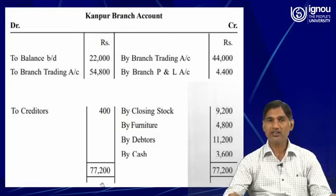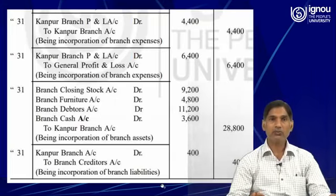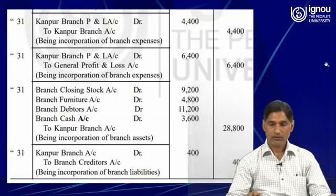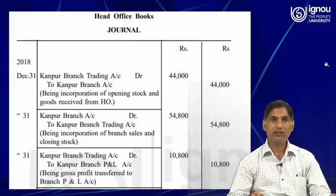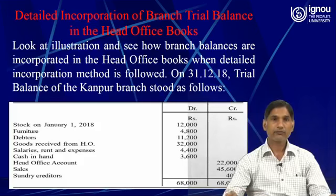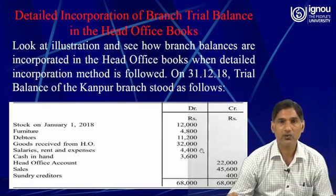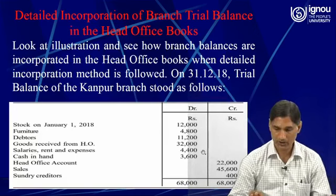The total of the asset side is 77,200. We need to prepare the journal entries pertaining to stock, furniture, debtors, goods received, salary, rent, and expenses — 4,400 is given: salaries, rent and expenses 4,400 is given.